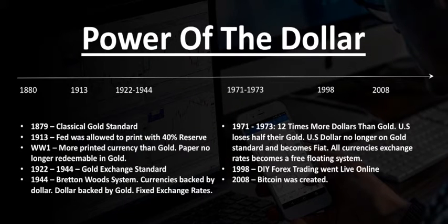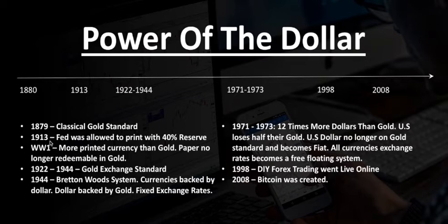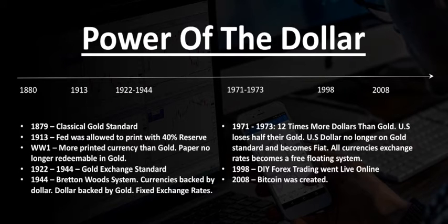So let's talk about the power of the dollar. In 1879, the dollar was pretty much held to the classical gold standard, which means that the currency itself was backed by gold. In 1913, the Federal Reserve was allowed to print money with 40% reserve — so it wasn't 100% backed by gold, but it was backed by gold 40%. By the time World War I came along, there was more printed currency than gold, so paper was no longer redeemable in gold.